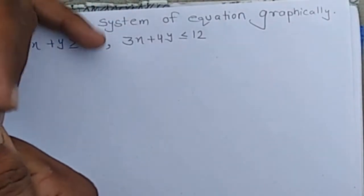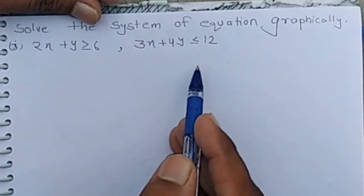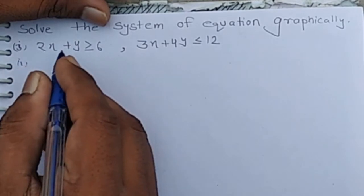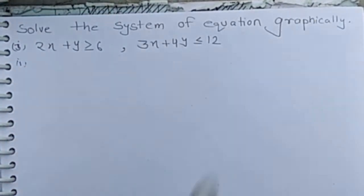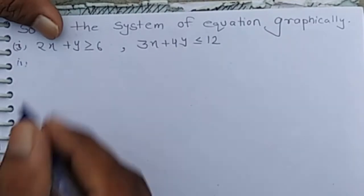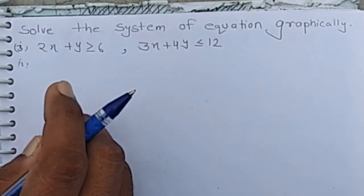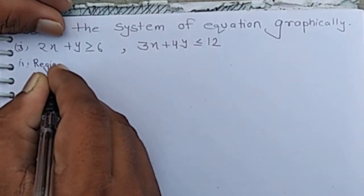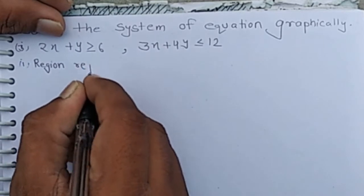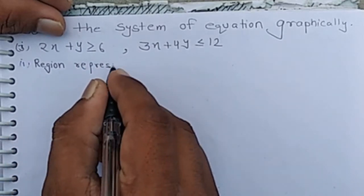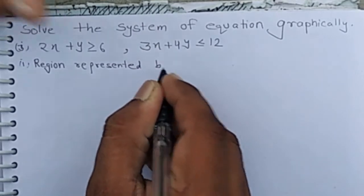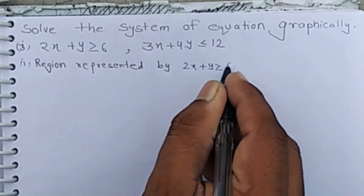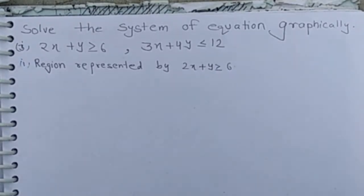Good morning class. We have to solve these inequalities graphically. The first inequality is 2x plus y is greater than or equal to 6. We write the region represented by this inequality. For 2x plus y greater than or equal to 6, we consider the equation.